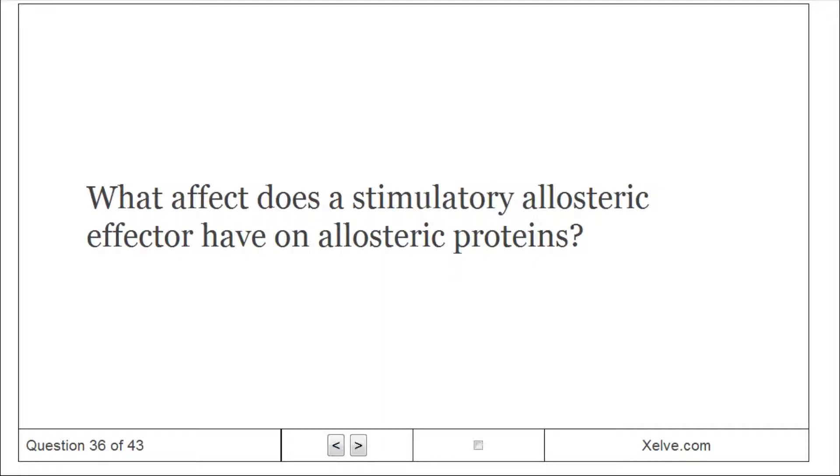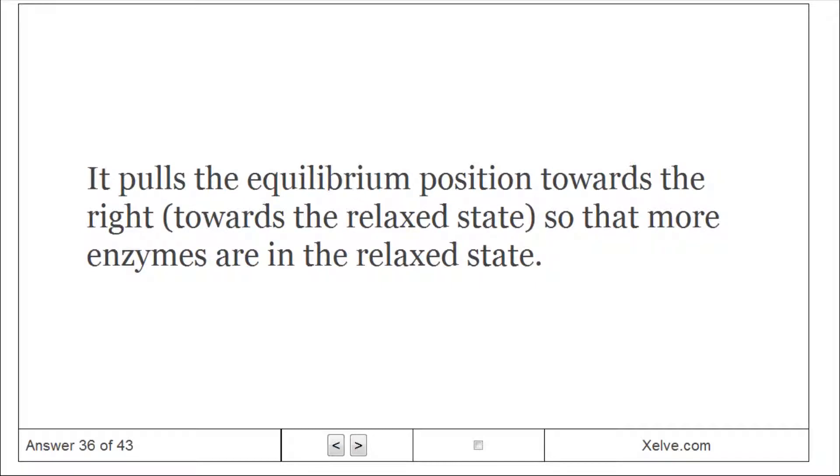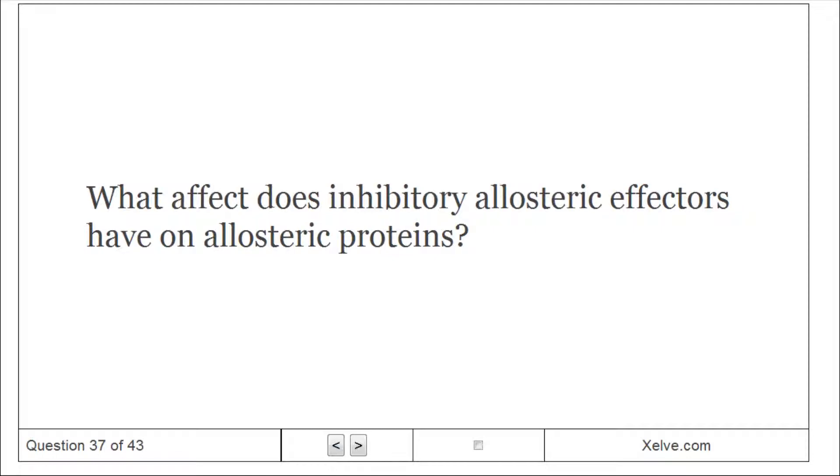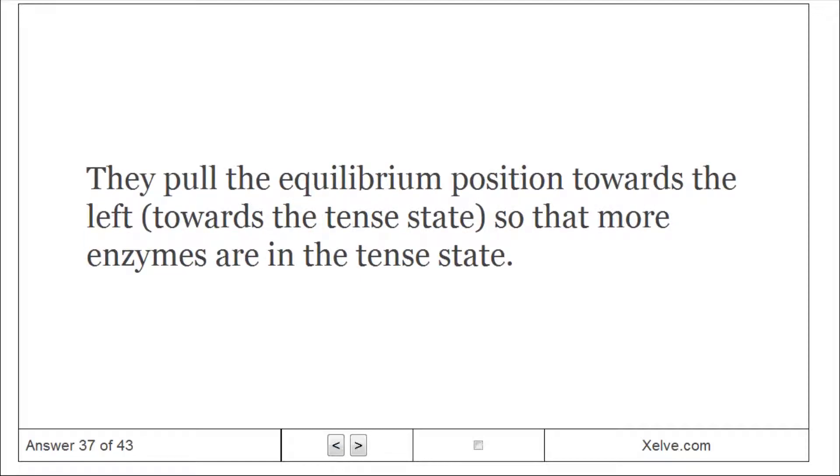What effect does a stimulatory allosteric effector have on allosteric proteins? It pulls the equilibrium position towards the right so that more enzymes are in the relaxed state. What effect does inhibitory allosteric effectors have on allosteric proteins? They pull the equilibrium position towards the left so that more enzymes are in the tense state.